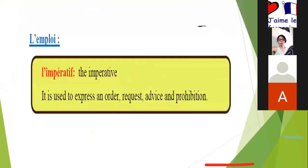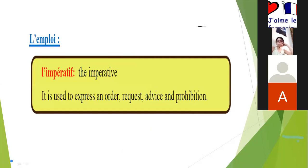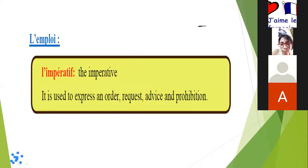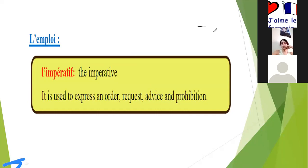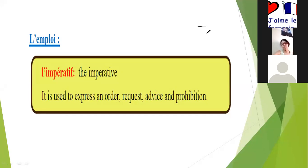L'impératif — in English we call it the imperative. It is used to express an order, a request, an advice, and a prohibition. Imperative means we are making an order: open your door, keep quiet, close the window. We can also use it to make an advice: be a good girl, listen to your mom. And also a prohibition — a prohibition means to tell someone not to do something.